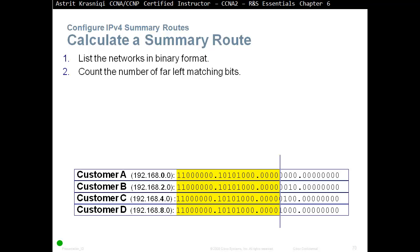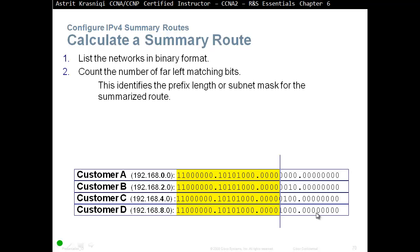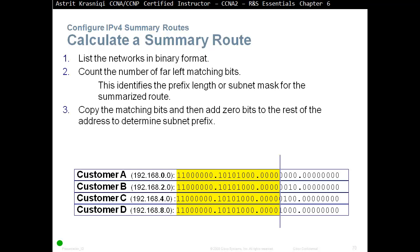We count how many bits are exactly the same. The first octet is 8 bits, another 8 bits makes 16, then 17, 18, 19, 20 — so 20 bits are exactly the same. This identifies the prefix length or subnet mask for the summarized route. Copy the matching bits and then add zero bits to the rest of the address to determine the subnet prefix. So the matching bits are copied, and forward slash 20 is our subnet mask or prefix.